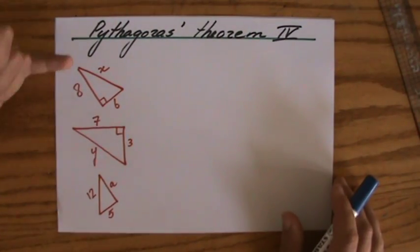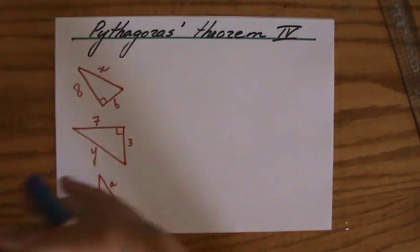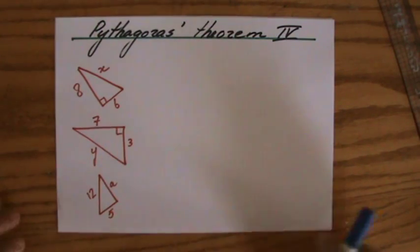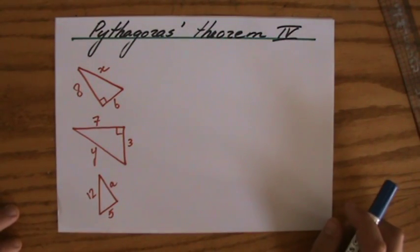So it's time now to have a look at some example questions so you can really decide for yourself whether you understand Pythagoras' theorem, yes or no. The question is to find, to calculate the missing lengths, and if you have a non-exact answer to three significant figures. So have a go and I will see you when you are finished.